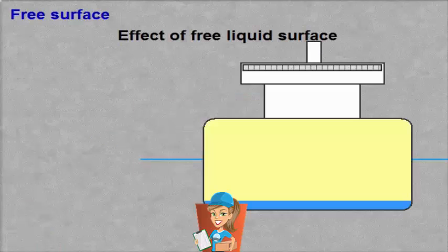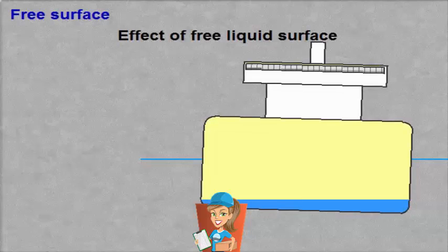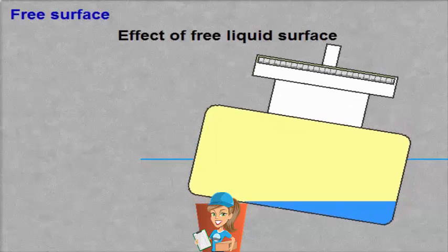When the surface of a liquid is free to move, the effect is that G raises towards M. GM decreases. The liquid will of course always move to the lowest side. The effect is mainly dependent on the breadth of the space where liquid is present. This is because the free surface effect is proportional to the breadth.